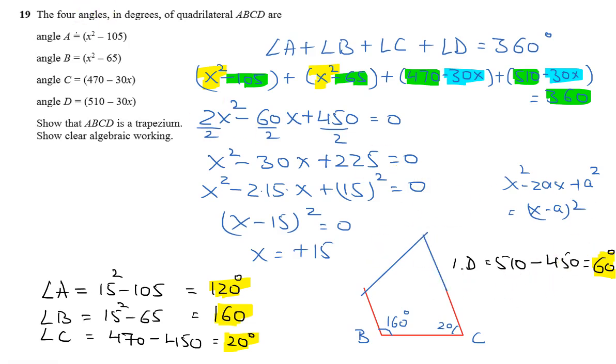This is angle A, 120, and this is angle D, which is 60. We can see that angle B and angle C are supplementary angles, the sum is 180. So it means AB is parallel to DC, so ABCD is a trapezium.